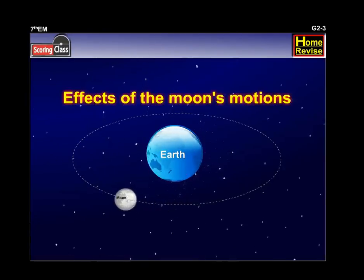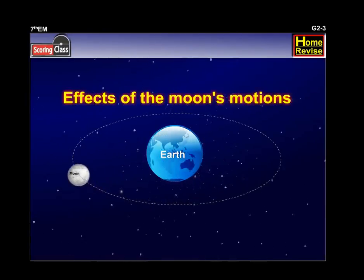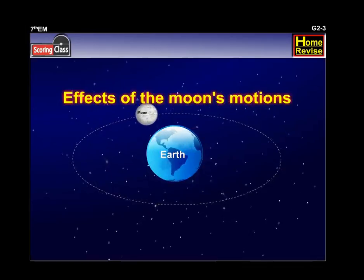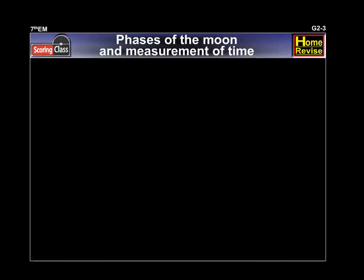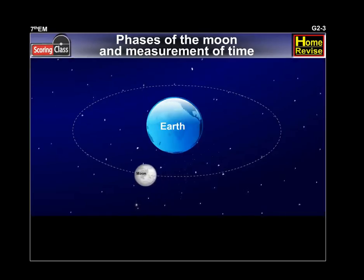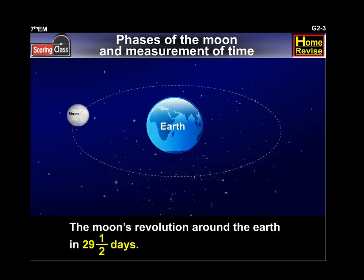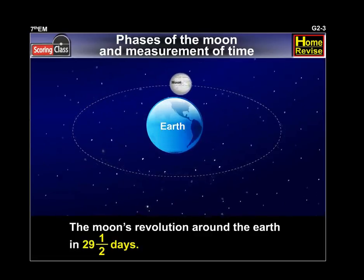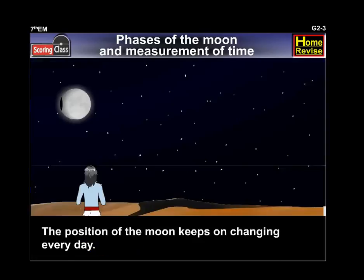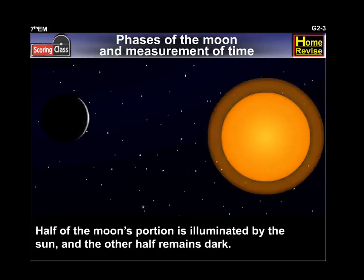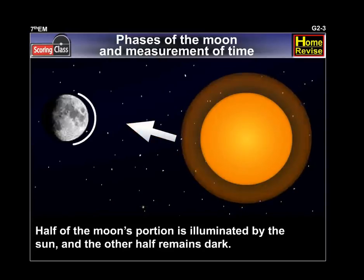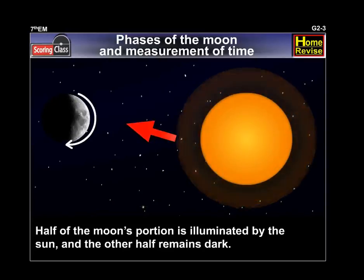Let us study the effects of the Moon's motions. Firstly, the phases of the Moon and measurement of time. As a result of the Moon's revolution around the Earth in 29 and a half days, the position of the Moon keeps on changing every day. Half of the Moon's portion is illuminated by the Sun and the other half remains dark.